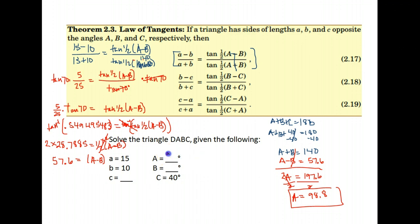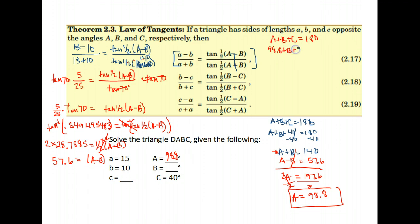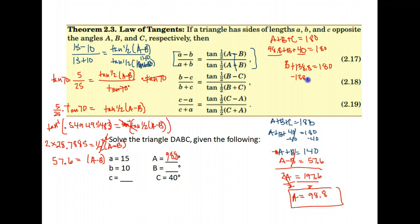I found one of the values I needed. To find the next value, you can put 98.8 in for A and solve for B, or go back to the fact that the three angles in a triangle have to add to 180. Putting in the values I know — A is 98.8 and C is 40, because that was part of my given information. 40 plus 98.8 is 138.8. Subtract that from both sides, and I get that B is 41.2.